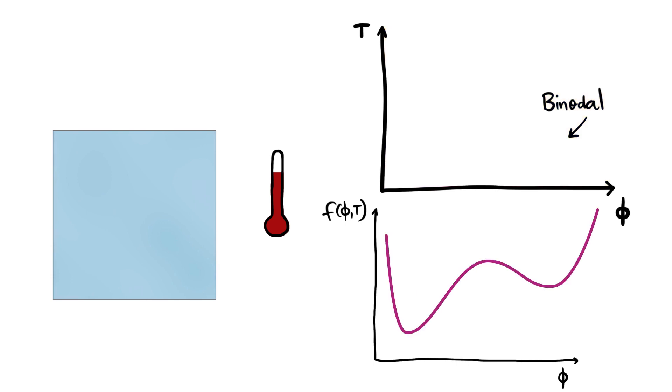If the free energy is asymmetric the binodal will also be asymmetric. This can happen for example if the solute molecules are larger than the solvent molecules.